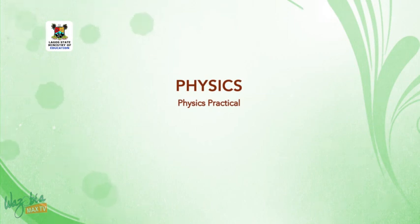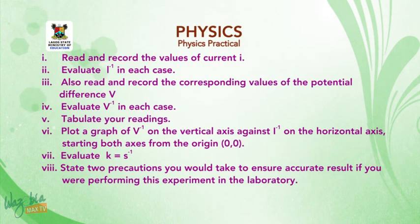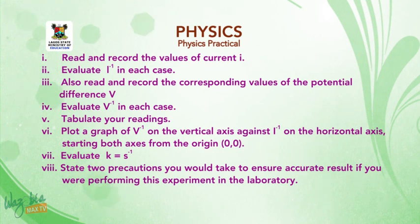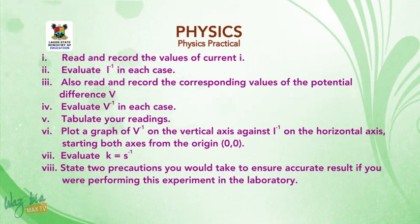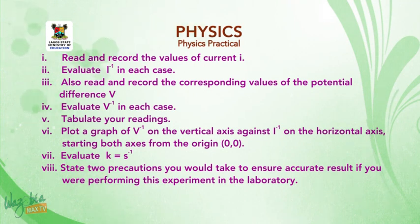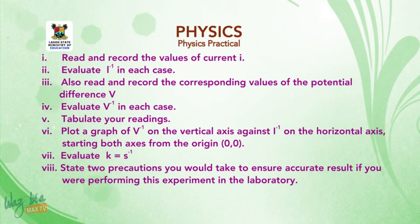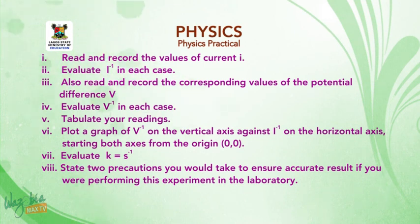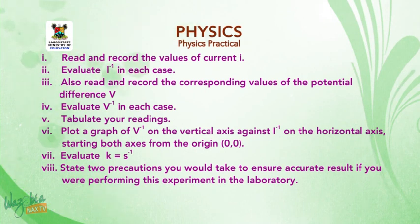Welcome back to the final segment of the lesson. The instructions are: 1. Read and record the value of current I. 2. Evaluate the current inverse (1/I) in each case. 3. Also read and record the corresponding value of potential difference V. 4. Evaluate the voltage inverse (1/V) in each case. 5. Tabulate your readings. 6. Plot the graph of 1/V on the vertical axis against 1/I on the horizontal axis, starting both axes from the origin. 7. Evaluate K = 1/slope. 8. State two precautions you would take to ensure accurate results if performing this experiment in the laboratory.